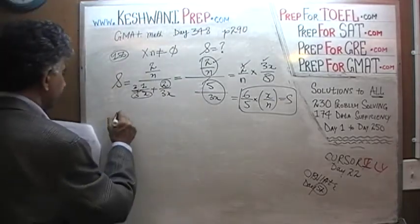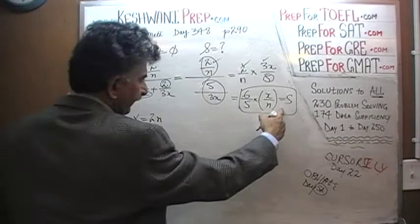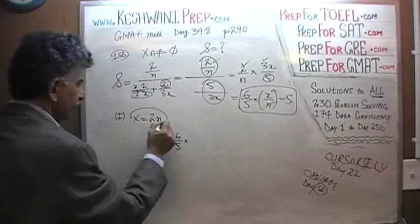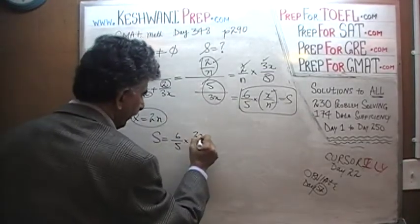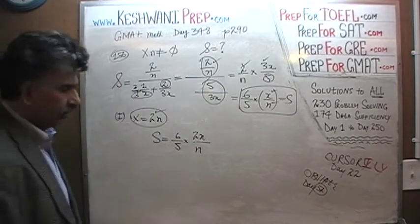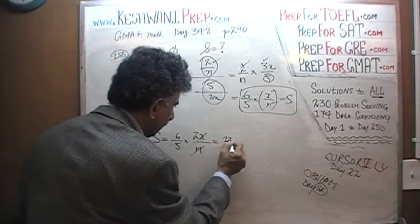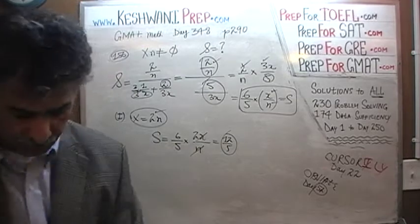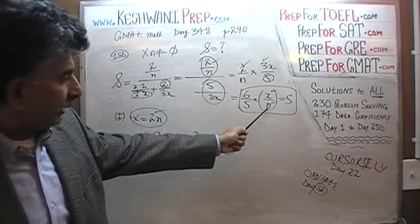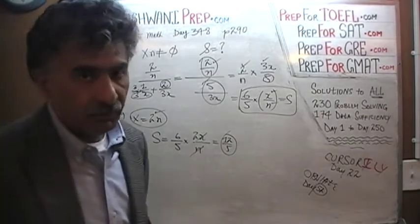In the first statement, they tell us that x equals 2n. We substitute: s = (6/5) × (x/n) = (6/5) × (2n/n). The n drops out, and s = 12/5. You just have to see immediately that if x = 2n, putting 2n in the numerator makes n cancel. The first statement does the job quite nicely.